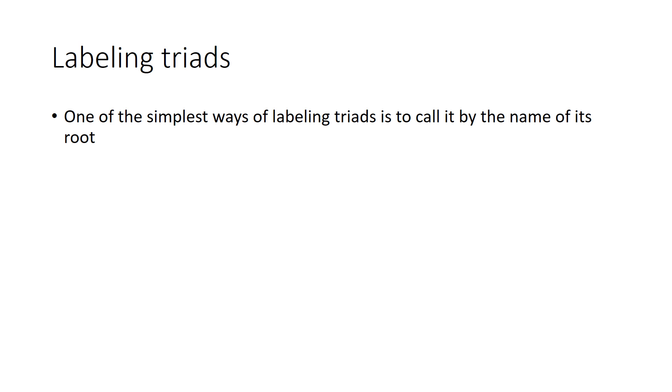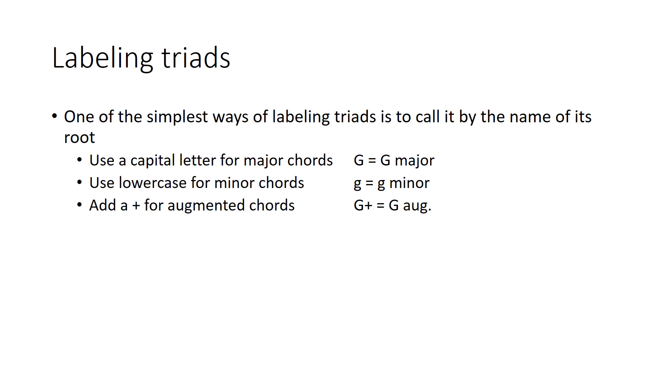So here's the labeling system we'll be using for triads to indicate what their quality is. We will call it by the name of its root, and then use a capital letter for major chords. So a capital letter G would be G major. Lowercase letters for minor chords. So lowercase G is G minor.